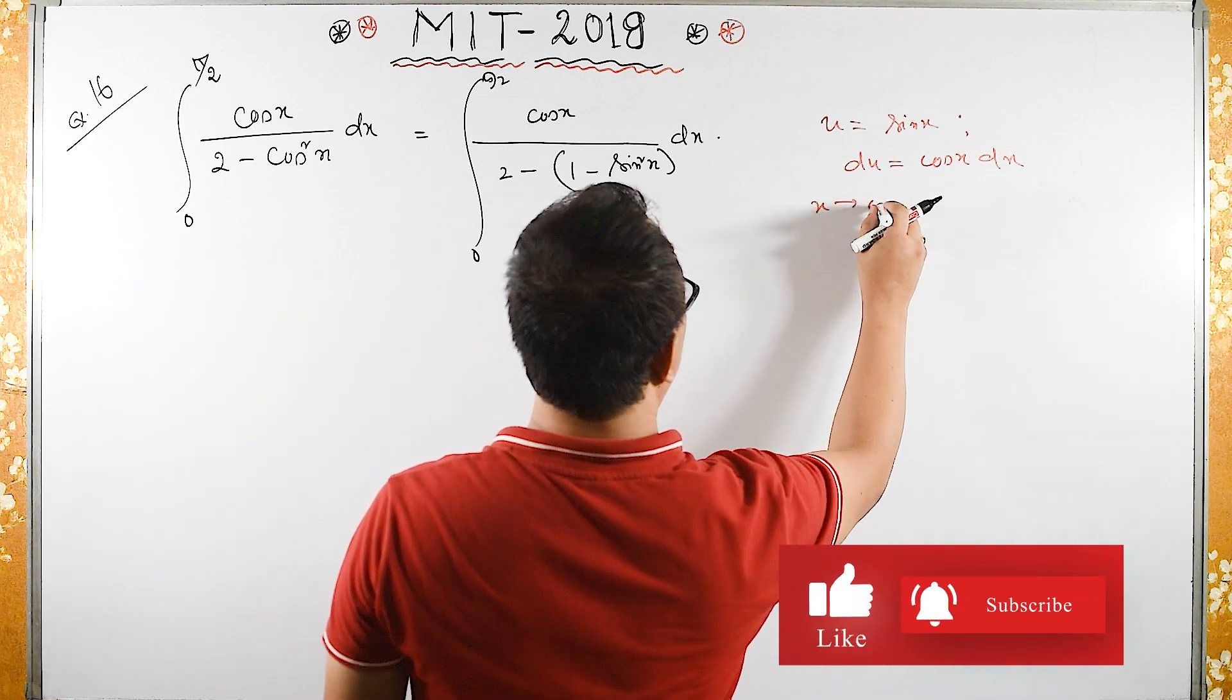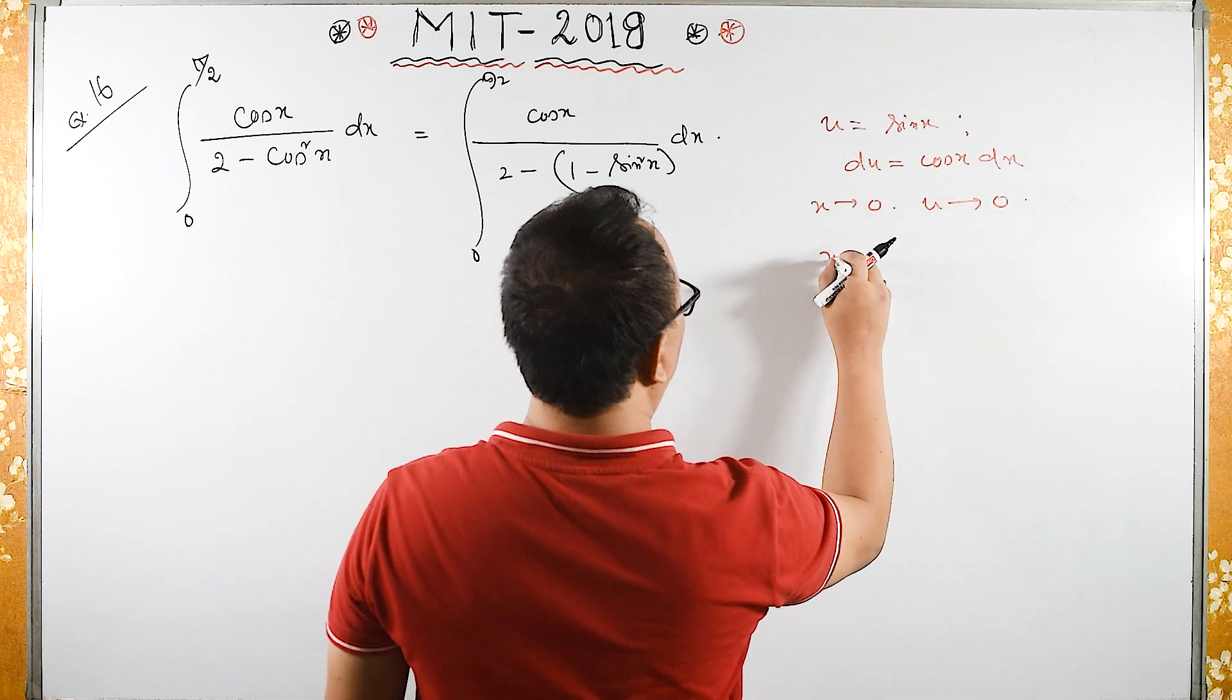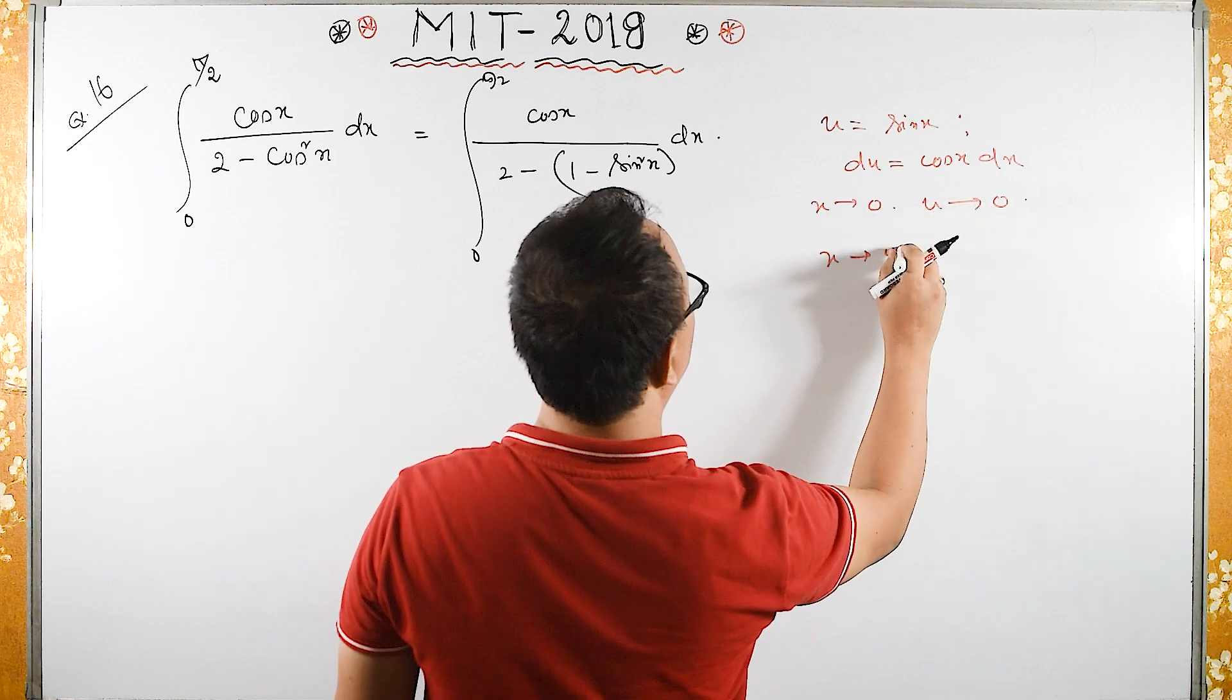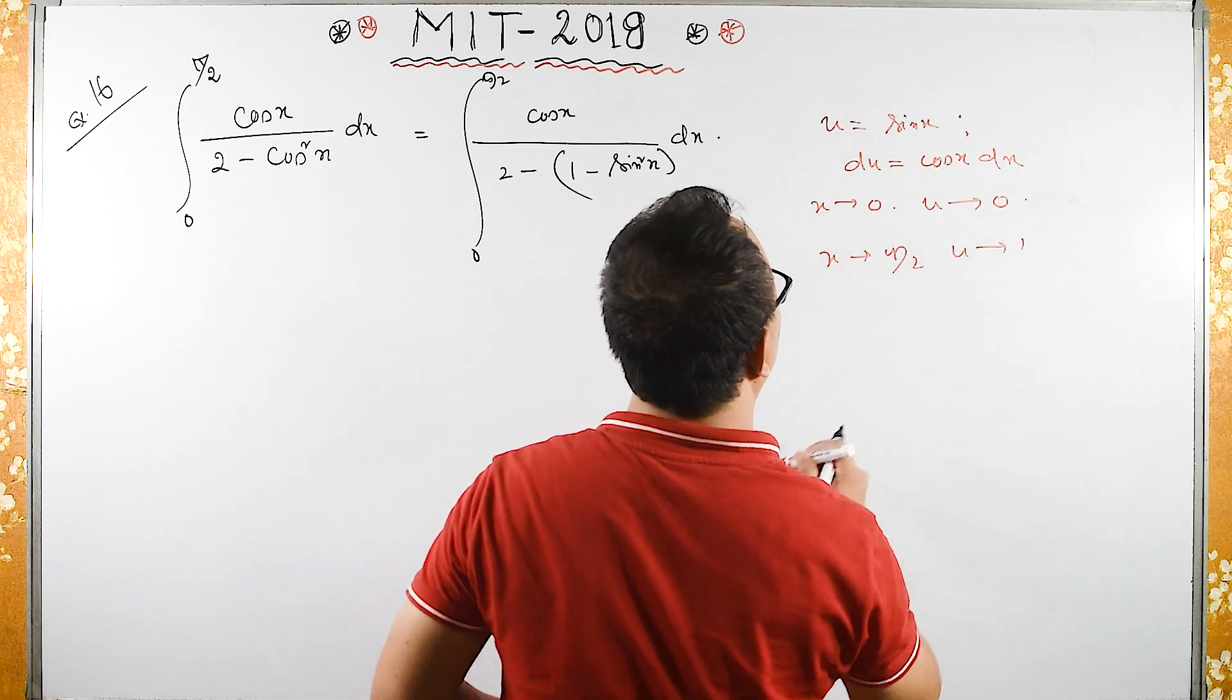What about when x tends to 0? Then sin 0 is 0. And when x tends to pi by 2, sin pi by 2 is 1, so u tends to 1.